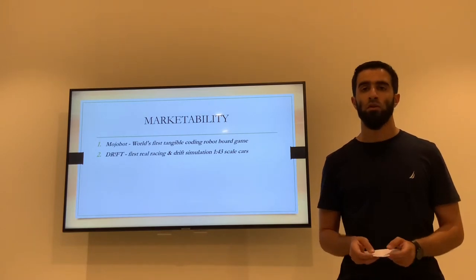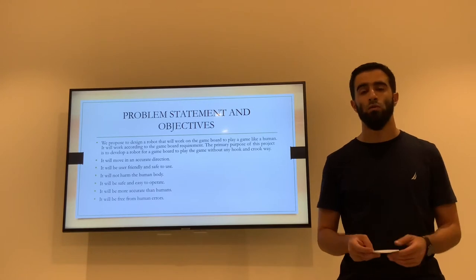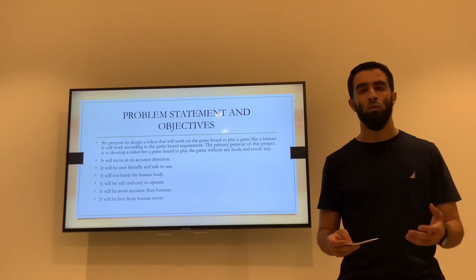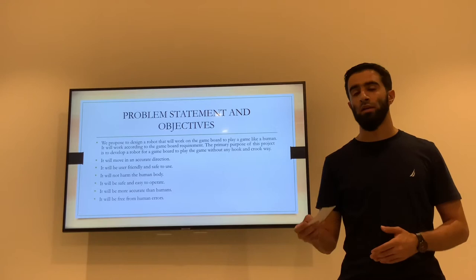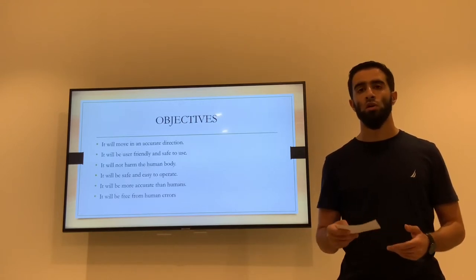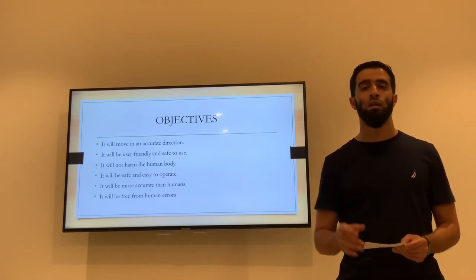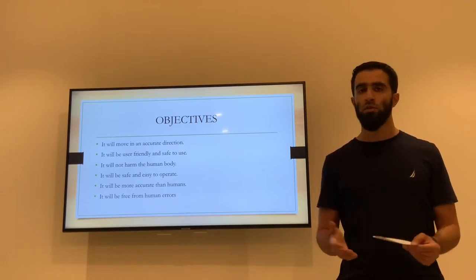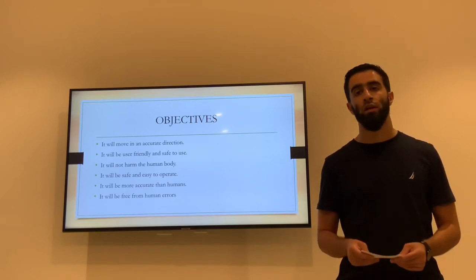The next point is the problem statement, objectives, and goals. Our project design is to design a robot game board that will work on the game board and play a game like a human. We're going to focus on objectives such as moving in the accurate direction, safe to use, easy to use, not harmful to the human body, and more accurate than human.